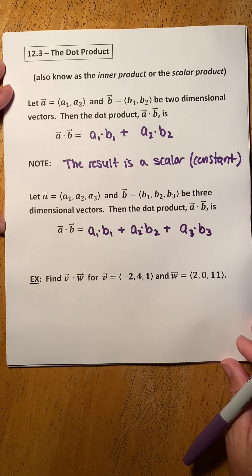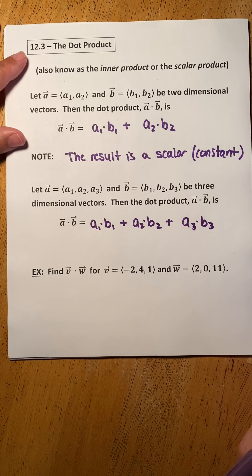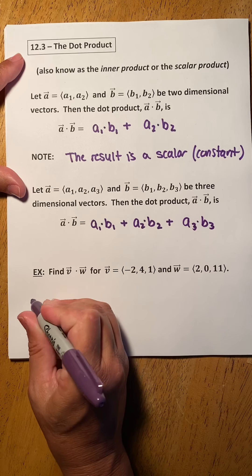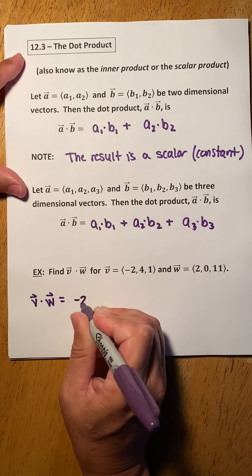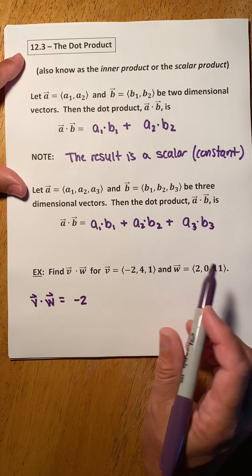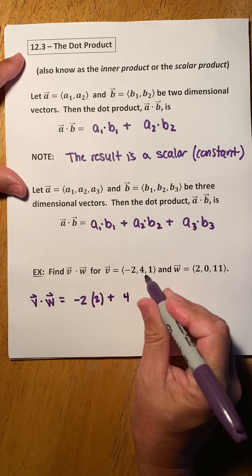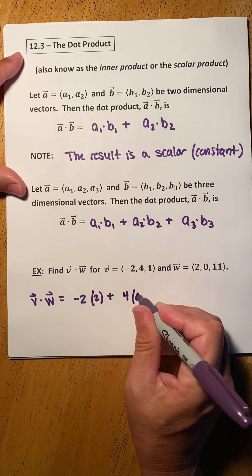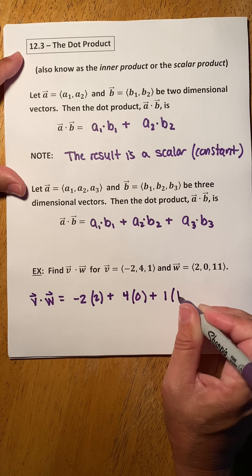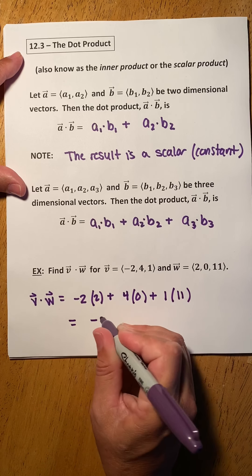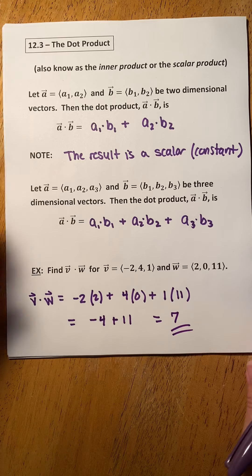So let's find the dot product of these two vectors. Vector V is negative 2, 4, 1, and vector W is 2, 0, 1. We find the dot product V dot W by doing negative 2 times 2, plus the second component of V times the second component of W, plus the third component of V times the third component of W. We get negative 4 plus 0 plus 11, and the result is the scalar 7.